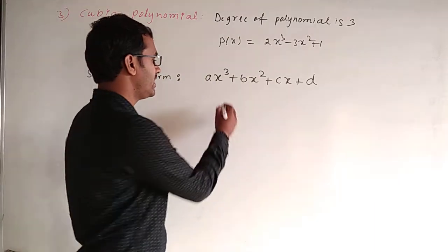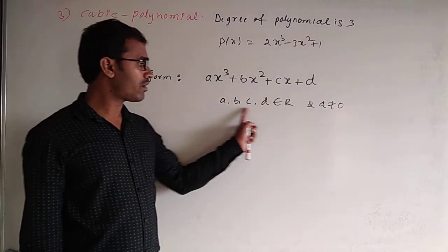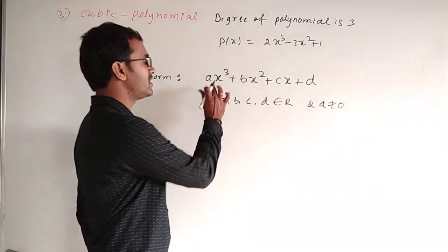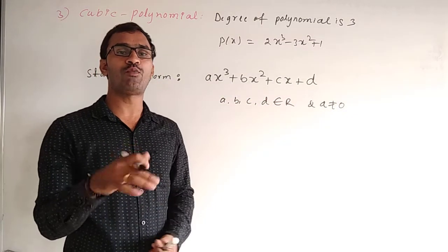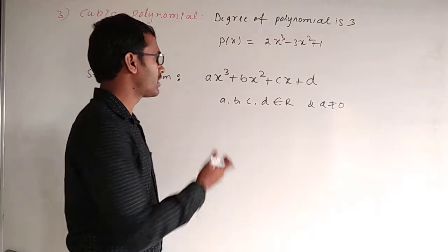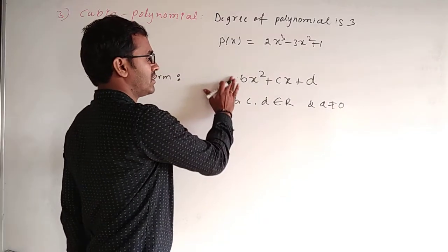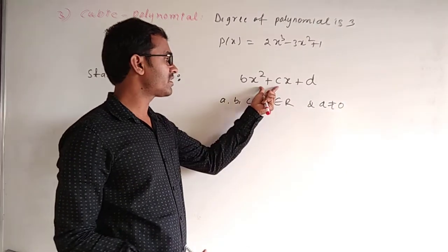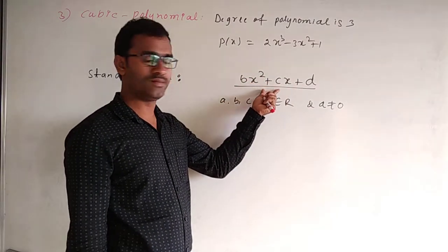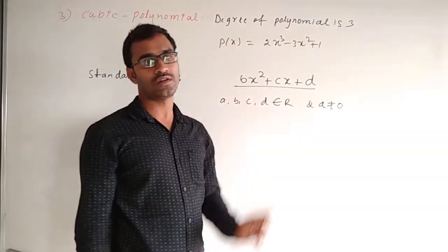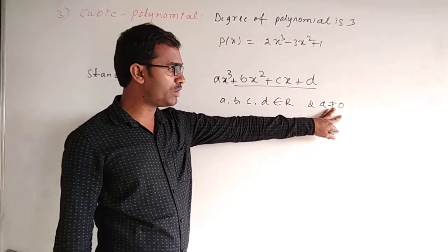In the standard form ax³ + bx² + cx + d, a, b, c, and d are real numbers and a is not equal to 0. If a equals 0, then 0 × x³ = 0, and the equation becomes bx² + cx + d, which has degree 2. So if a equals 0, the cubic polynomial becomes a quadratic polynomial.